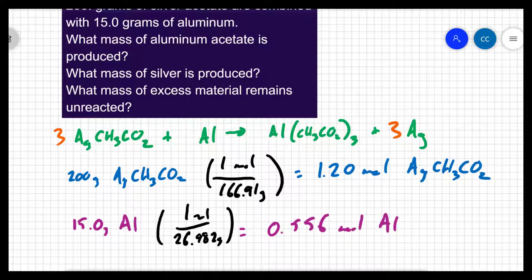So I've written a balanced equation. I've converted my data to moles. Here, because I'm given amounts of both of my reactants, I have to figure out which one is limiting.